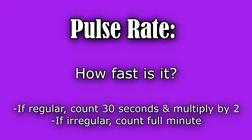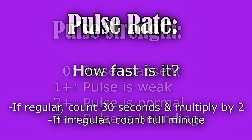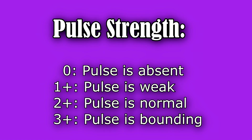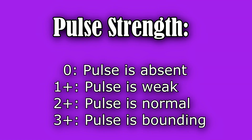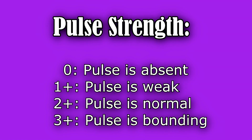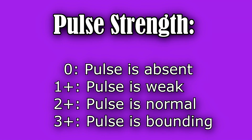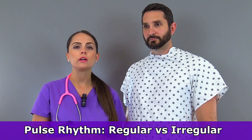Whenever you're assessing the pulse, you will be looking at a few things. One thing will be the rate — how fast is it — along with the strength, and you'll be grading it on a scale of 0 to 3, with 0 being absent, 1 plus it's weak, 2 plus it's normal, and 3 plus it's bounding. And then you'll want to look at the rhythm: is it regular or irregular?